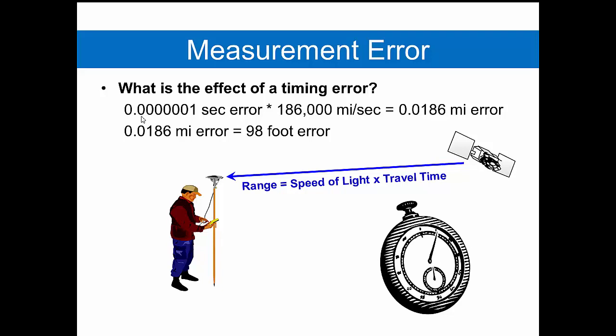This would be one ten millionth of a second of error. A ten millionth of second in timing error would produce a 98-foot error on the ground. Or another way of saying that is the coordinate we have really represents the middle of some 98-foot diameter circle. And all we know is the receiver is somewhere inside that circle. For some things that may be adequate. But for survey grade work, that is not an acceptable accuracy that we can use for engineering and surveying and mapping work.